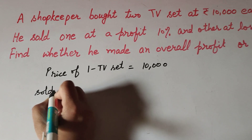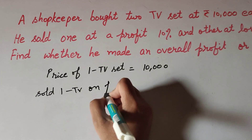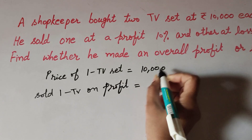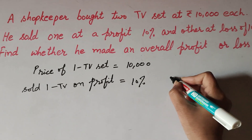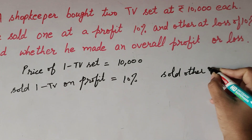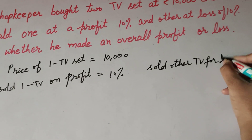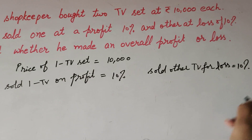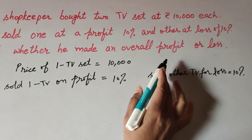He sold one TV at a profit of 10 percent, and sold the other TV at a loss of 10 percent. So we need to find whether he gets an overall profit or loss.